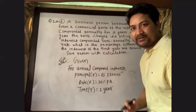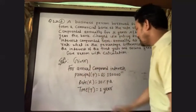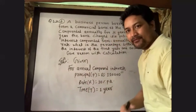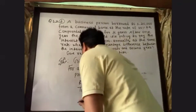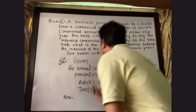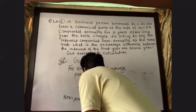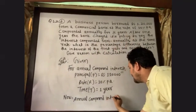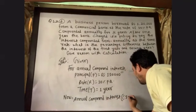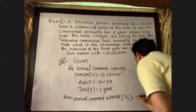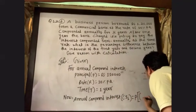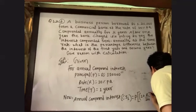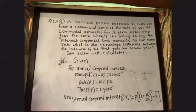We know the principal, rate, and time. Now we can find the annual compound interest. The formula for annual compound interest CI1 is: CI1 = P × [(1 + R/100)^T − 1].